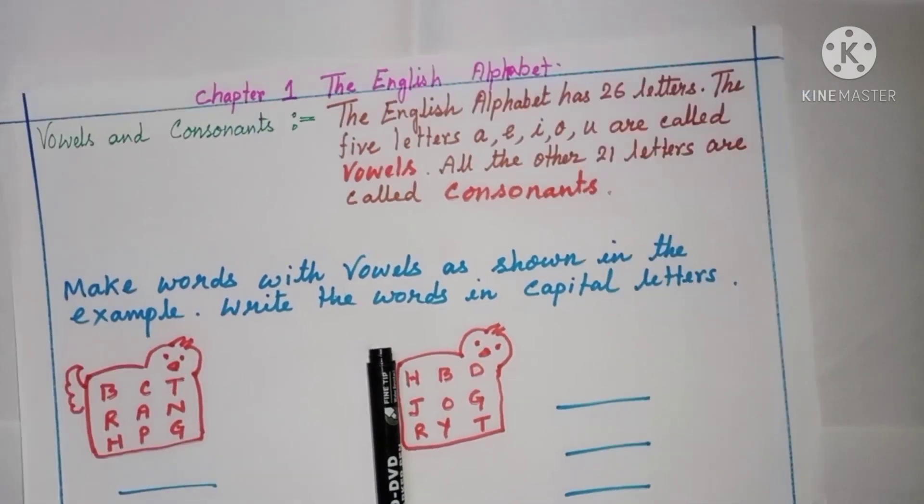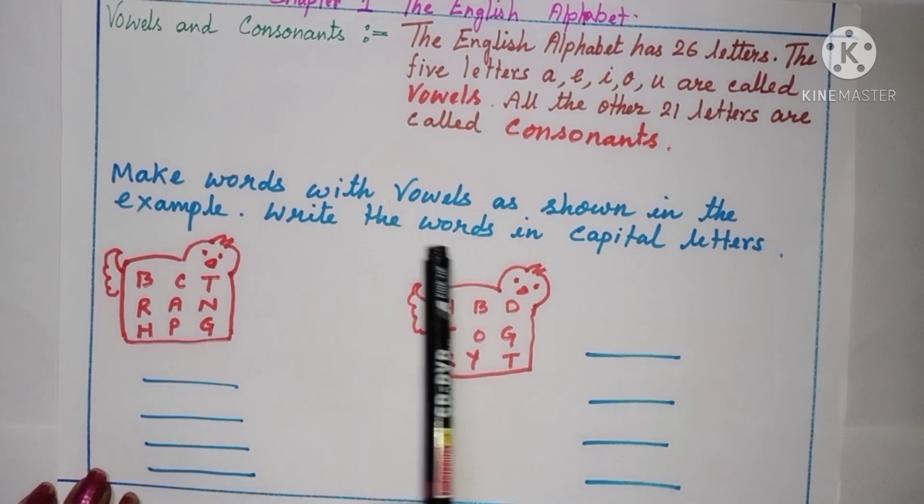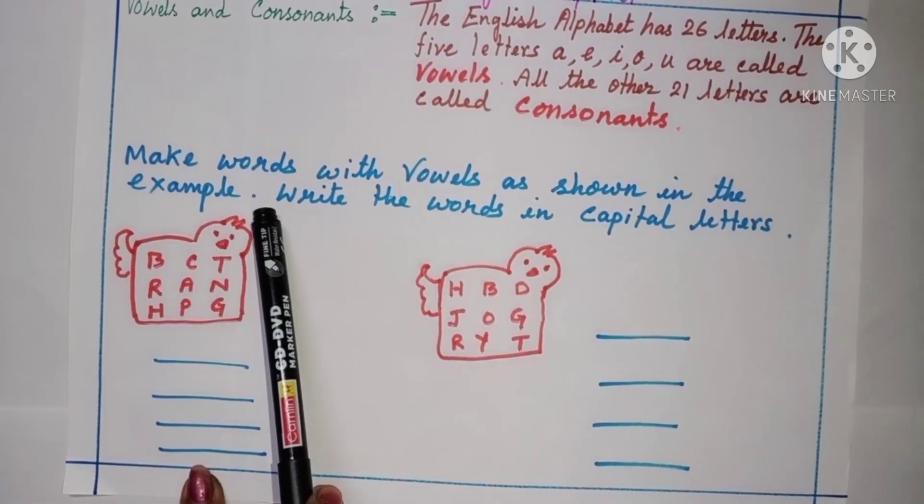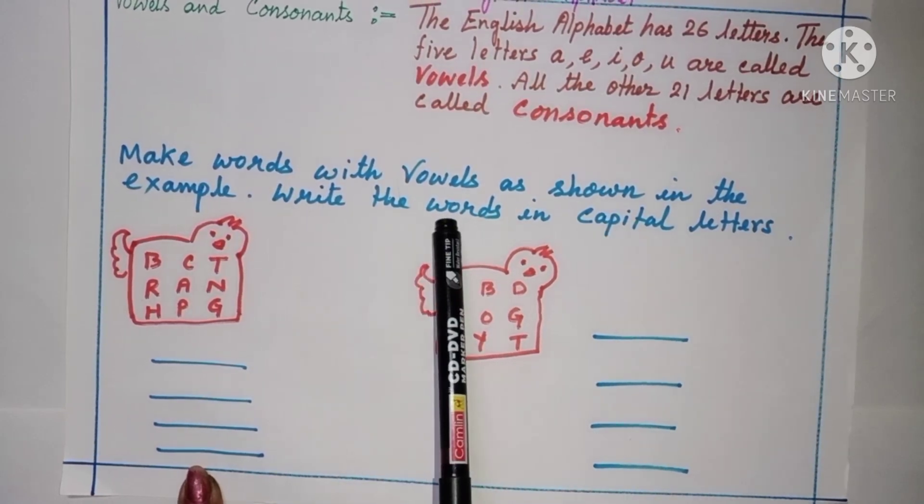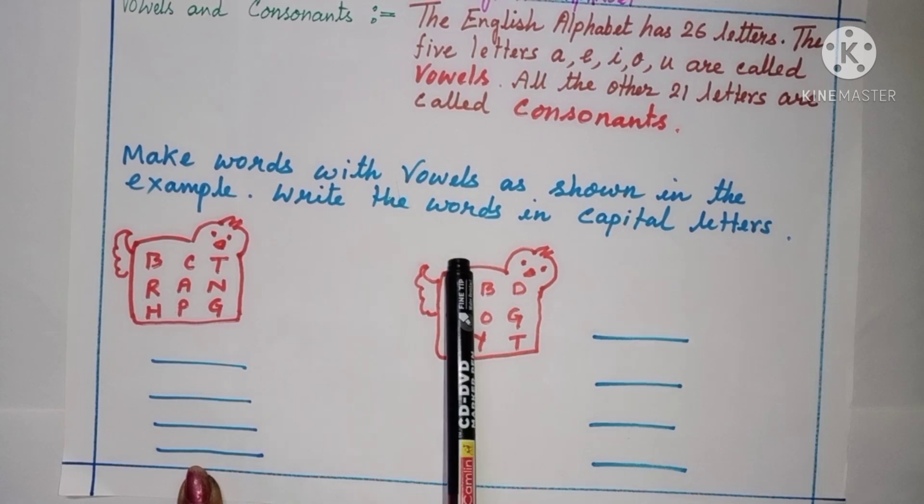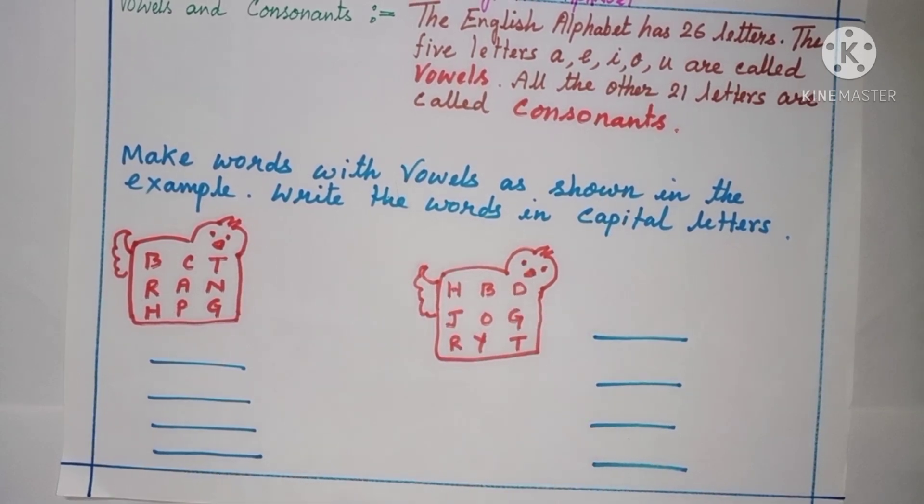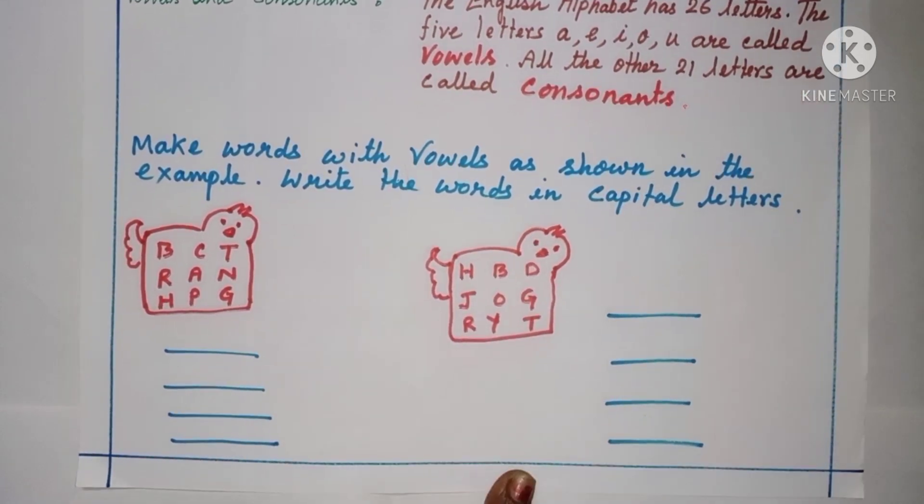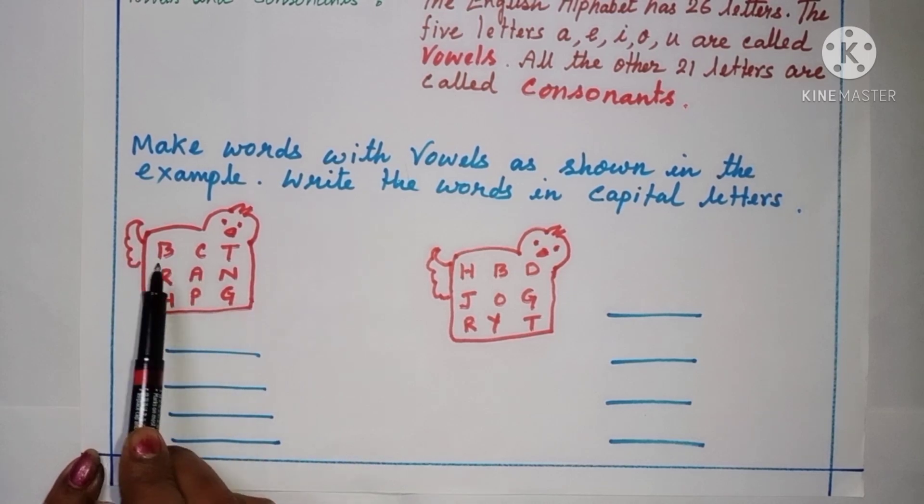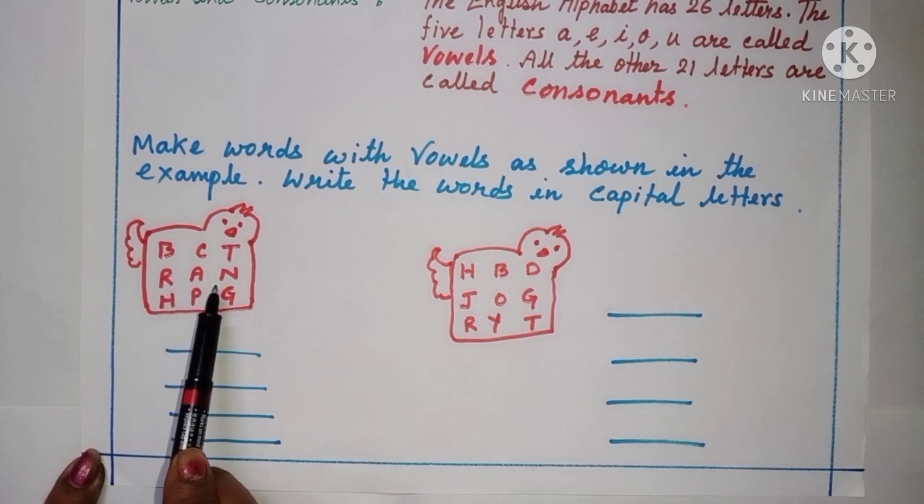So today, we will do a game. Make vowels with vowels as shown in the example. Write the words in capital letters. Here you see, in this box, it is written B, C, T, R, A, N, H, P, G.